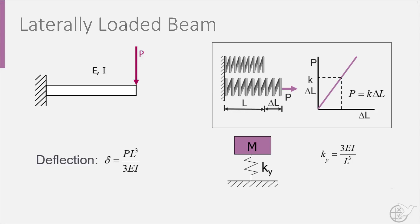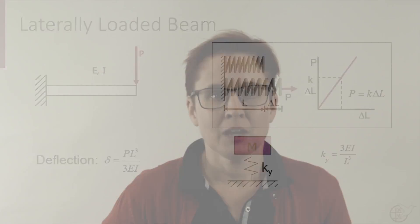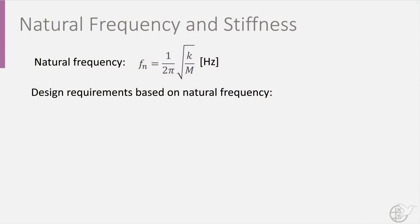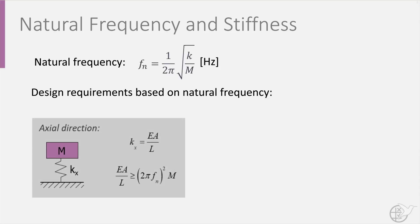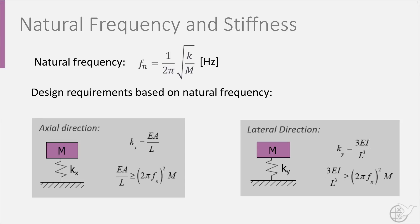This moment of inertia can be seen as the resistance of the geometry, or the cross-section, against deformation. Substituting the expressions for axial and lateral stiffness into the formula for natural frequency, we find two design requirements. In the axial direction, the stiffness kx must be larger or equal to (2π × fn)² × m. In the lateral direction, the lateral stiffness must be larger than (2π × fn)² × m. This allows us to size our spacecraft in terms of length, width, and thickness.